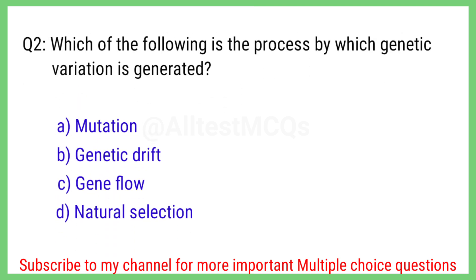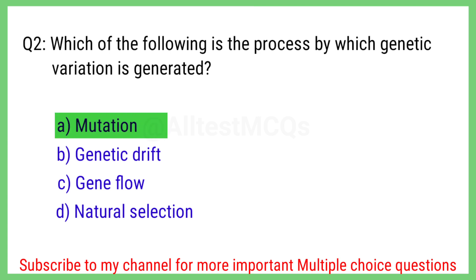Question number 2. Which of the following is the process by which genetic variation is generated? The right answer is option A. Mutation.